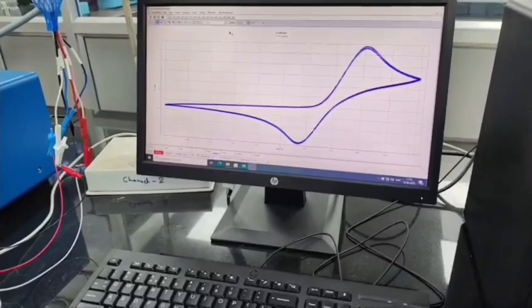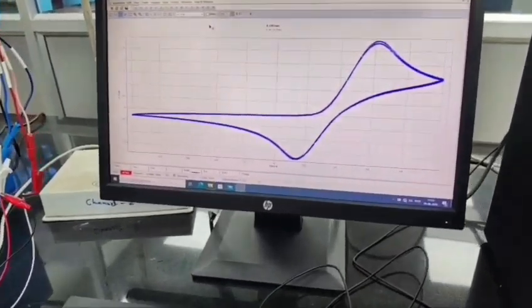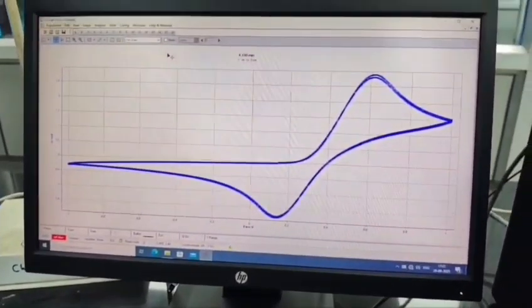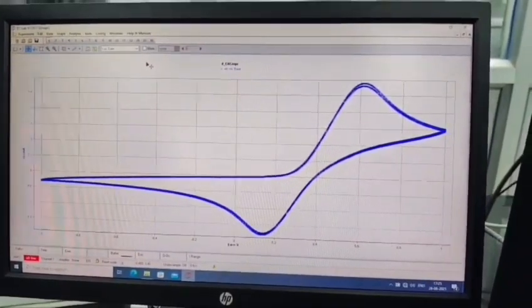This is the voltammogram. In this there are two axes. The x-axis shows the potential range from minus 1 to plus 1, and the y-axis shows the current from oxidation and reduction.